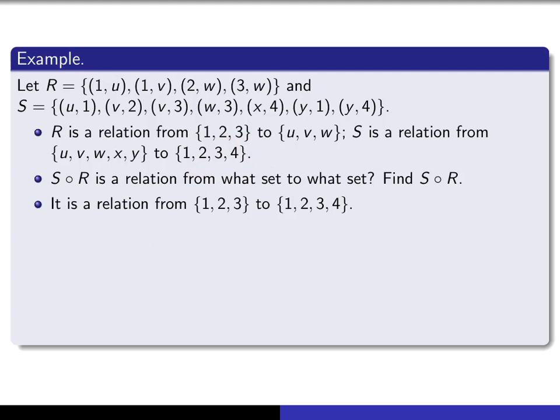Now let's see if we can calculate what it is. So let's begin with R. R starts with a 1. 1 is R related to u, and S relates u to 1. So we'll have (1,1) in the composition. 1, R relates 1 to v, and v is related by S to either 2 or to 3. So we'll have both (1,2) and (1,3) in the composition. R relates 2 to w, and w is related by S to 3. So we'll have (2,3). R relates 3 to w, and again, S relates w to 3, so we'll have (3,3). So those should be all of the elements of the composition R composed with S.